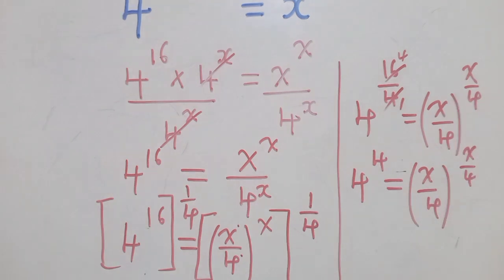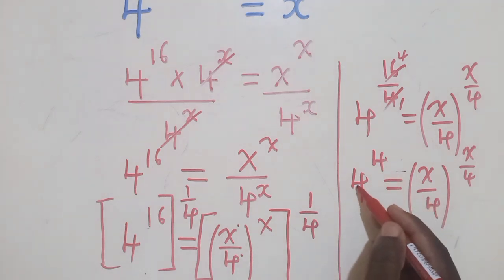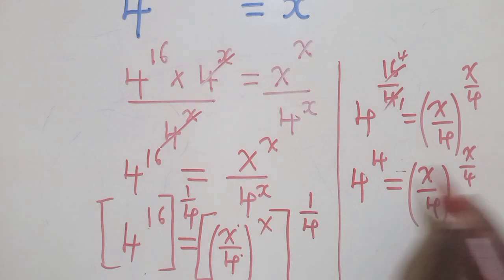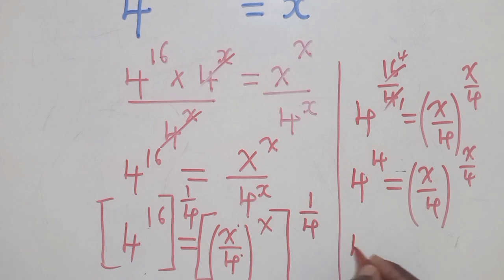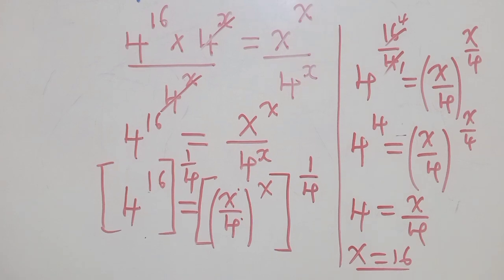We know there is a property which says that for as long as this base is equal to the power here, and the base here is equal to the power, you can equate these two or you can equate the bases. That will give us 4 is equal to x/4. To solve for x, we cross multiply - x will be equal to 16. So the value of x in this case is 16.